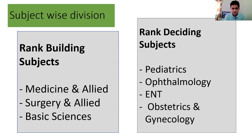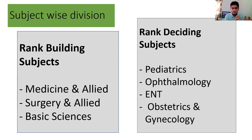Once you have reached the top 20,000, the rank-deciding subjects will push you higher. Pediatrics has 60 questions, Ophthalmology has 60 — so nearly 180 questions come from these subjects alone, plus nearly 300 questions from Obstetrics and Gynecology, ENT, Ophthalmology, and Pediatrics combined. Any student who has good command over these four subjects will go higher in the rank. So finish your rank-building subjects first, followed by rank-deciding subjects, and you will definitely come in the top 5,000.